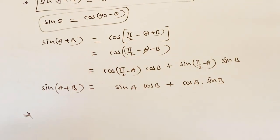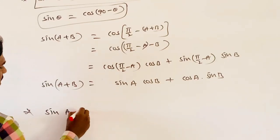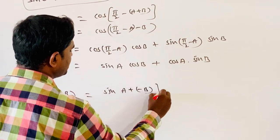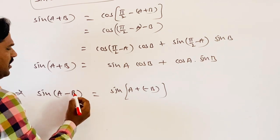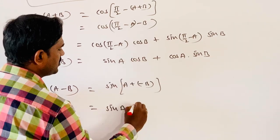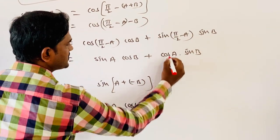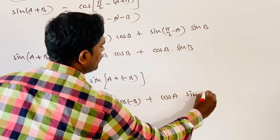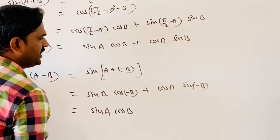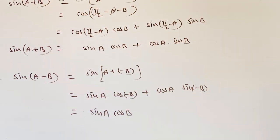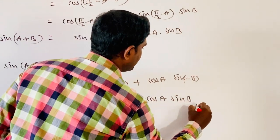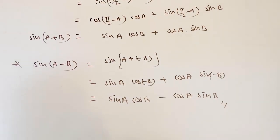From this, we will find one more value: sin of A minus B. By substituting minus B instead of plus B in the above equation, we will get sin A cos(minus B) plus cos A sin(minus B). Then, cos(minus theta) value is cos theta, so the result is sin A cos B. And sin(minus theta) value is minus sin theta, so we get minus cos A sin B. This is the value of sin A minus B. Thank you.